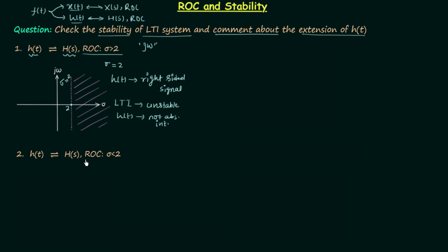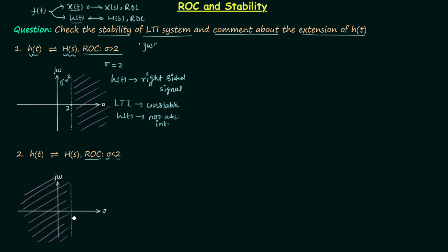In the second part, the region of convergence is the region where σ is less than 2. We locate σ equal to 2 in the S-plane and draw a perpendicular line. The ROC is all the region on the left-hand side of this line, but points on the line itself are not included since the ROC does not contain any poles.